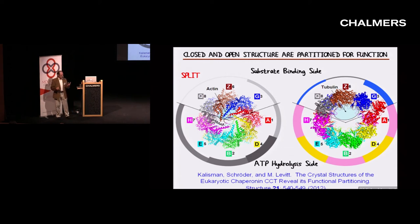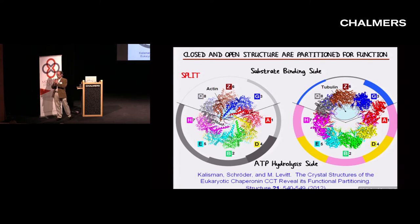They're going to be catalyzing ATP at different rates — they have different ATP binding sites. So it's kind of a much more interesting system for basically undoing a knot or undoing a difficult-to-fold protein. It's also true that in all the cases where people have found substrates, it's almost always actin-like — either actin or tubulin or something like that.